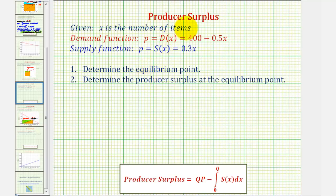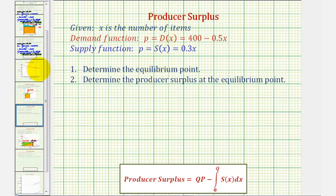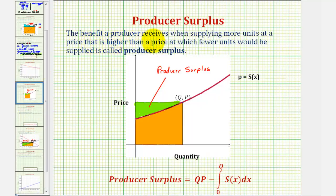Let's begin by reviewing producer's surplus. The benefit a producer receives when supplying more units at a price that is higher than a price at which fewer units would be supplied is called producer's surplus. One way to think of this: if you were selling a used car and you wanted to sell it for $2500, but you listed it at $3000 and it actually sold at $3000, the extra $500 you received unexpectedly could be considered producer's surplus.